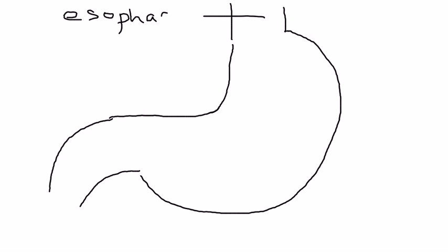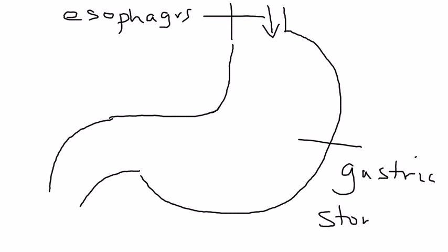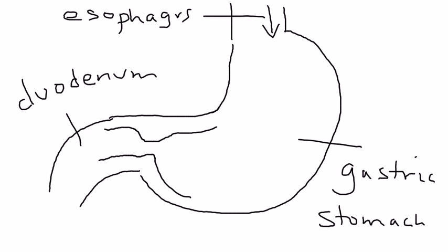So here you have the esophagus where food comes down, and then this big part is the gastric area or the stomach, and then coming out of course is the duodenum. The pylorus is a muscle in this area, and the pylorus by definition is essentially the part that connects the duodenum to the stomach.